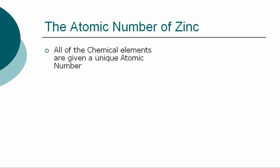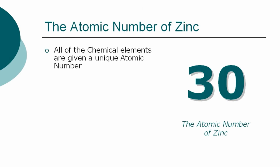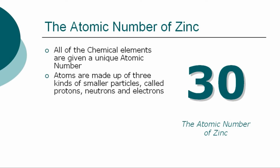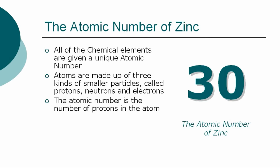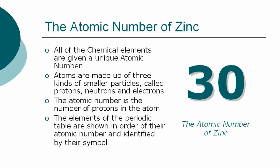All of the chemical elements are given a unique atomic number. The atomic number for zinc is 30. Atoms are made up of three kinds of smaller particles, called protons, neutrons, and electrons. The atomic number is the number of protons in the atom.